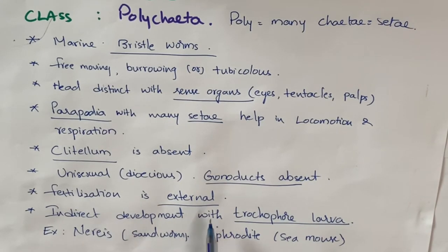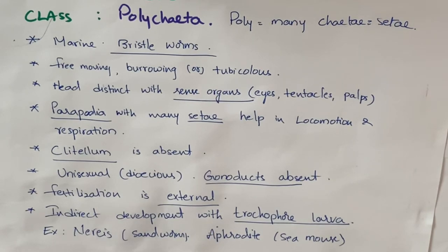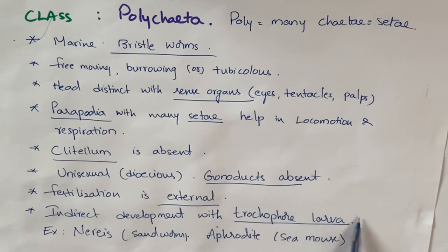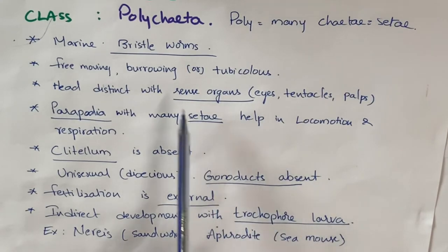Fertilization which occurs outside the body is known as external fertilization. Next, development is indirect development with a larval form. The larval form is known as a trochophore larva.